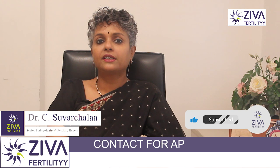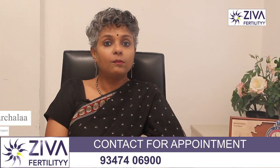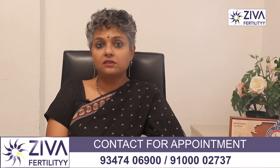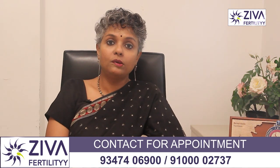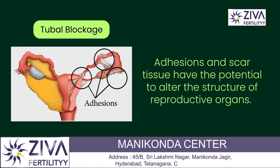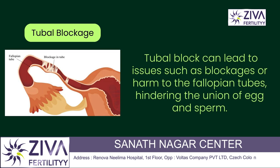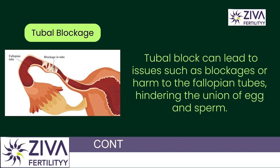So how can endometriosis cause infertility? It can cause anatomical distortions, especially tubal blockage. Adhesions and scar tissue can distort the anatomy of the reproductive organs — for example, causing blockage or damage to the fallopian tubes, preventing the egg and sperm from meeting.